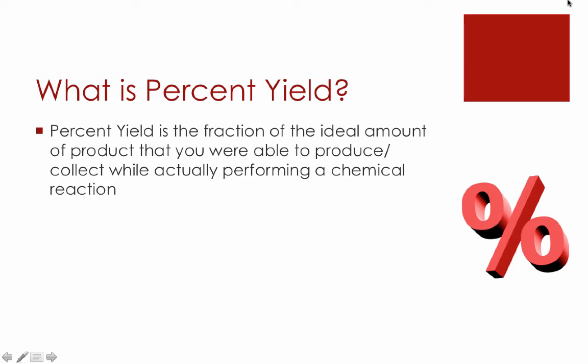So now that we've identified this ideal situation versus the real situation, we can talk about what percent yield is all about. Percent yield is the fraction of the ideal amount of product, which again comes from our stoichiometry, that you're able to produce and actually collect while really performing the chemical reaction. When you really do the reaction, you weigh the product that you make, and we're going to compare that back to the ideal. This ratio of real to ideal is represented as a percentage, which is why we call it percent yield, or a percent of the ideal outcome.